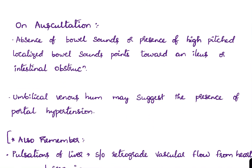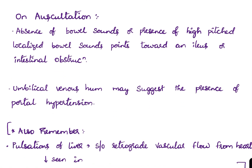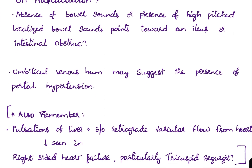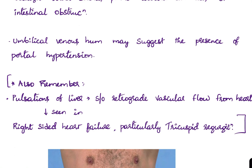On auscultation, absence of bowel sounds or presence of high-pitched localized bowel sounds points toward an ileus or intestinal obstruction. An umbilical venous hum may suggest the presence of portal hypertension.